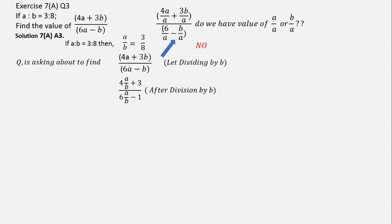So the equation will become 4a by b plus 3 oblique 6a by b minus 1. Now, as I said, we know the value of a by b is equal to 3 by 8. If we put that value here, we will be getting 4 into 3 by 8 plus 3 oblique 6 into 3 by 8 minus 1.